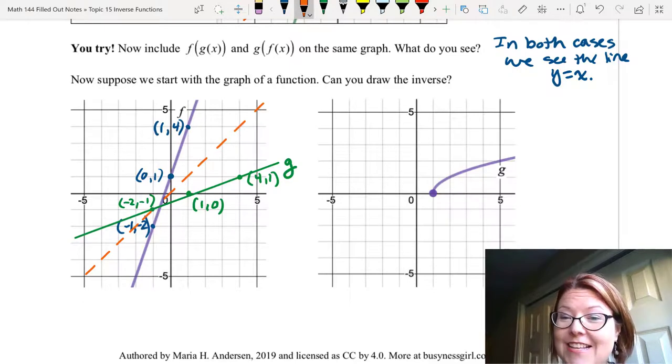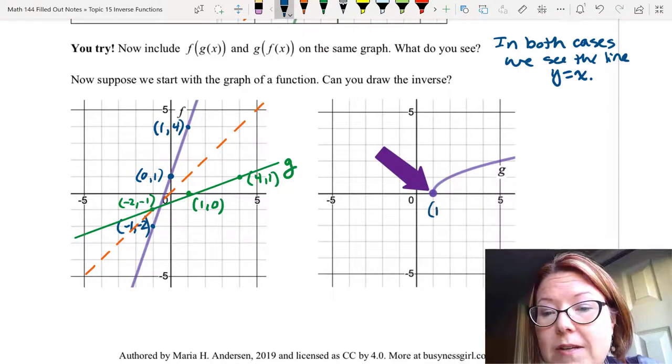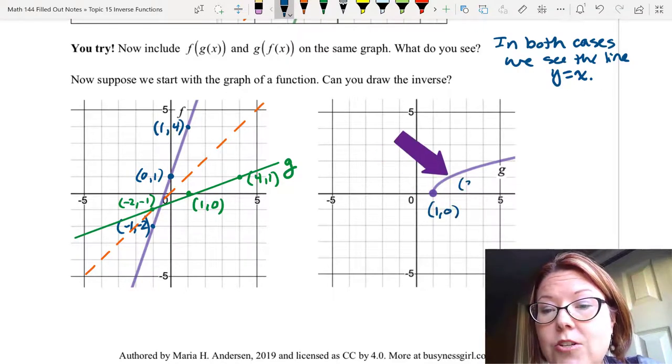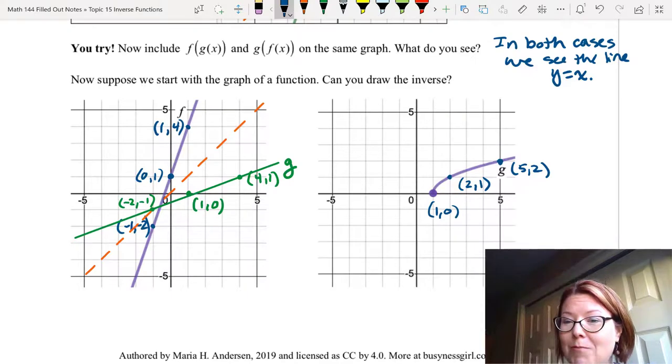Why don't you try the second graph? We have a graph that looks like a square root function. It has points at (1, 0) as its end point, (2, 1) as a point on the graph, and (5, 2) as another point on the graph. Pause the video and see if you can draw this inverse.